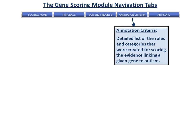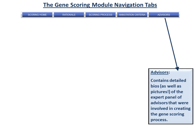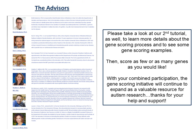Clicking the Annotation Criteria tab will take you to a detailed list of the rules and categories that were created for scoring the evidence linking a given gene to autism. And finally, the Advisors tab takes you to detailed biographies of the panel of advisors that were involved in creating the Gene Scoring Process. Please also take a look at our second tutorial for more information on the Gene Scoring Process as well as to see some Gene Scoring Examples.